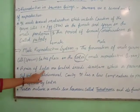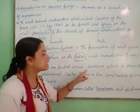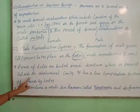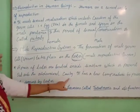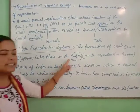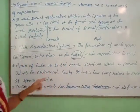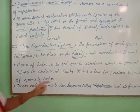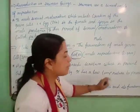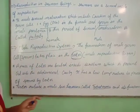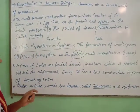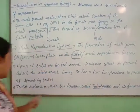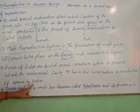A pair of testes are located inside the scrotum, which is present outside the abdominal cavity. The testicles are in a pair and are located behind the abdominal center. The temperature there is low. If the temperature is high, the testicles cannot secrete sperm. Temperature must be low for the testes to produce sperm.